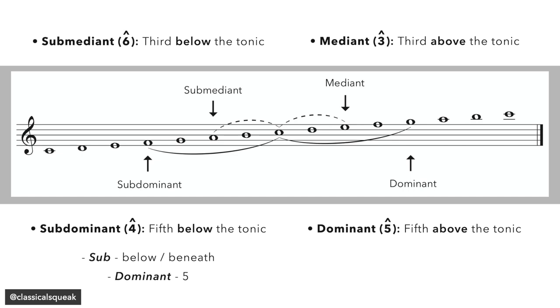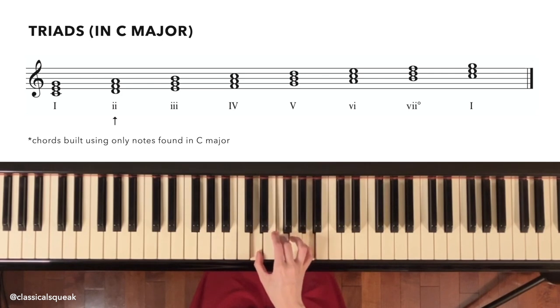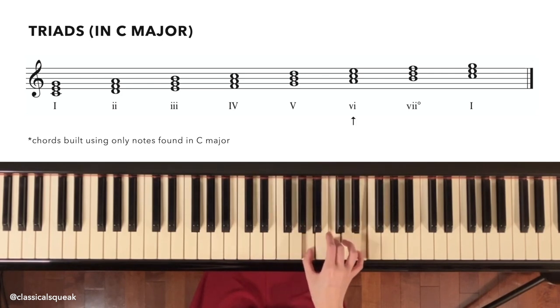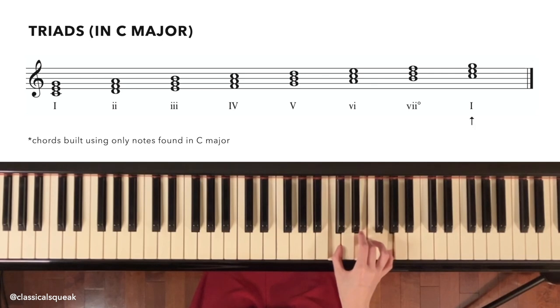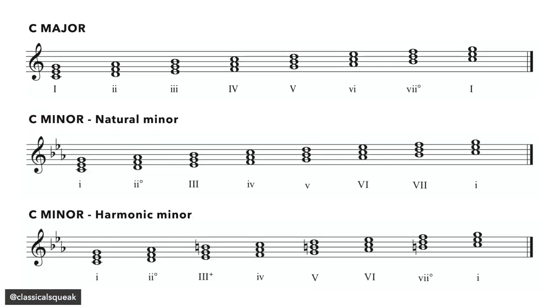One thing to note is that the subdominant note, which is the fourth note, is called subdominant because it is a fifth below the tonic, whereas dominant is a fifth above the tonic. This works the same with mediant being the third above and submediant being a third below the tonic. This is why submediant is not the second note and has led to some confusion, so I'm mentioning it just in case. For C major, if we build triads on top of these scale degrees using only the notes available in the scale, this is what we get. And here are the ones for natural minor scale and harmonic minor scale.